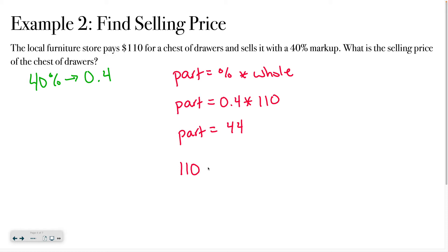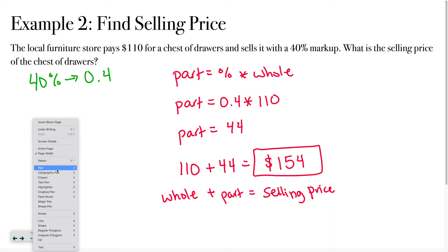So that tells me if I multiply those two numbers together, I would end up with 44. And that represents how much they want to increase the price before they sell it. So what I would do is take that original price and say plus 44. And that tells me that the furniture store is going to sell it at $154. So what I did was I took the whole and I added the part, and that equals the selling price.